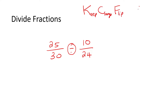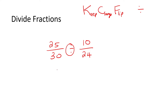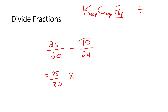This works when you have a divide sign. Keep means keep the first fraction the same — don't change that one. Change means change the sign to a multiply. And then flip means flip the second fraction upside down. That is step number one.